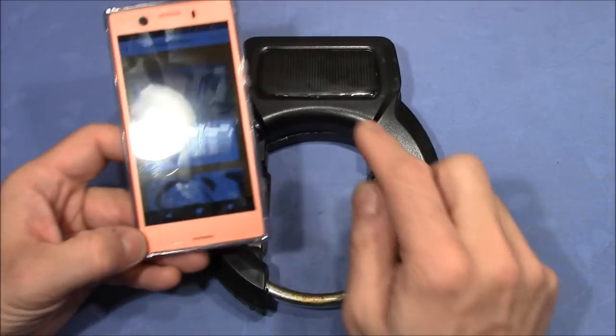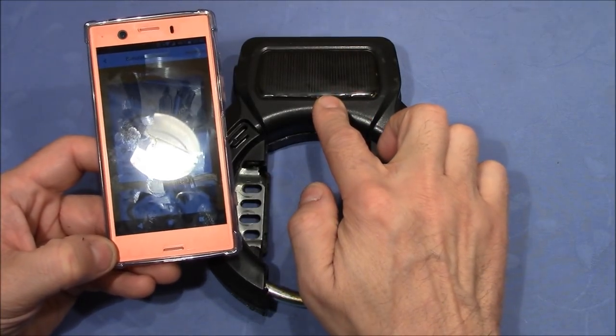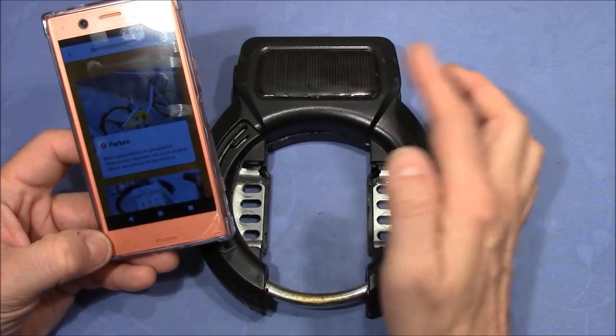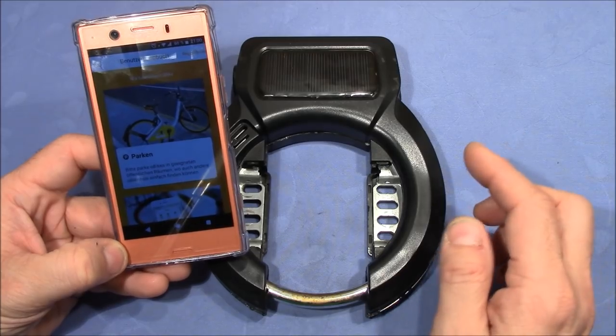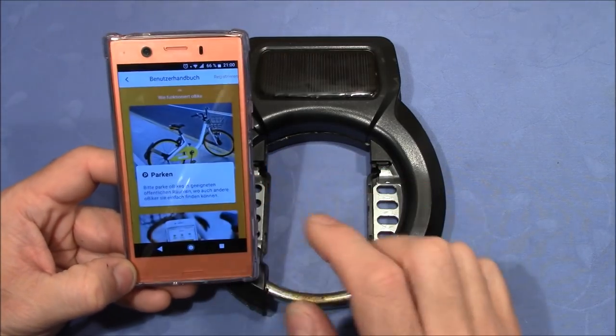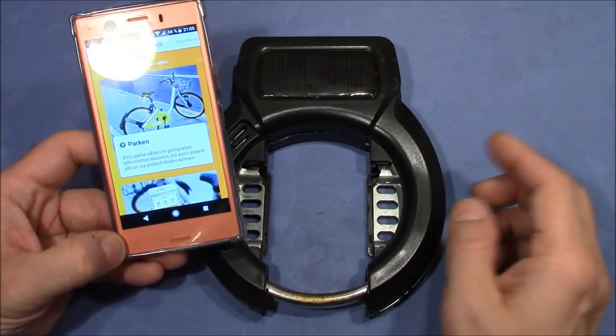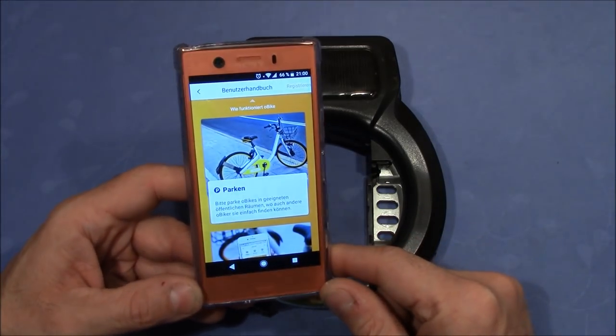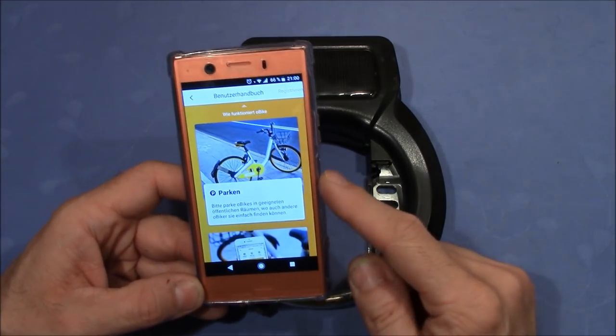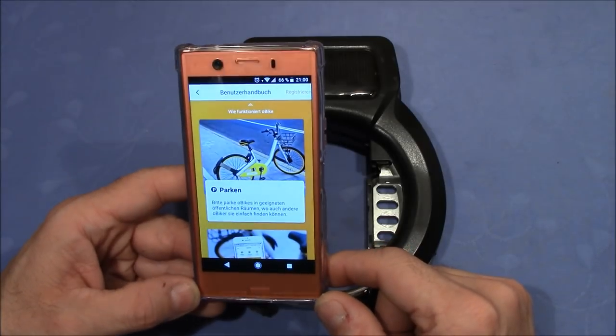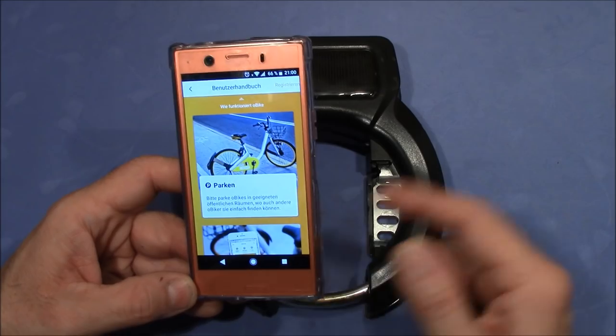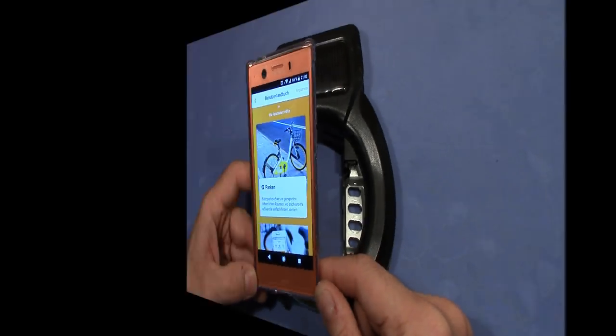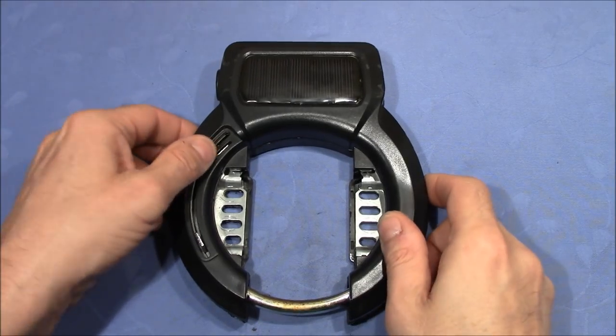Then the app opens a Bluetooth connection with the lock and unlocks it, and the paying time starts. You ride the bike and when you are done, you press another button in the app and close the lock. Then the paying time stops. While you are riding, the application sends position information to a server so that the system knows where the bike is located and can show it on a map.